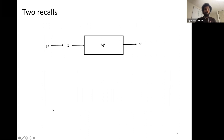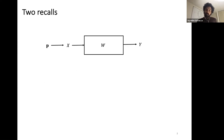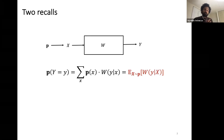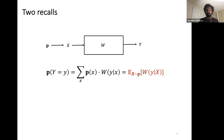Let's have a brief recall of some of the things. We are considering a scenario where we want to make inference on an unknown distribution p that generates data samples x, and we do not have access to x but only to an information-constrained version y. The transformation from x to y is modeled through a channel matrix w, and the output distribution is given by the sum over all x's of p(x) times the transition probabilities w(y|x), which can also be written as an expectation of the transition probabilities.